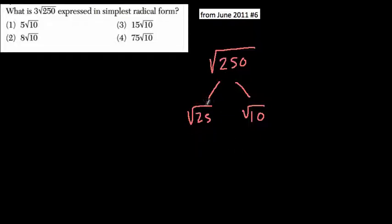And here, the square root of 25, we can think of that as just 5. And the square root of 10, there are no perfect squares in there, so we're kind of at a stopping point.